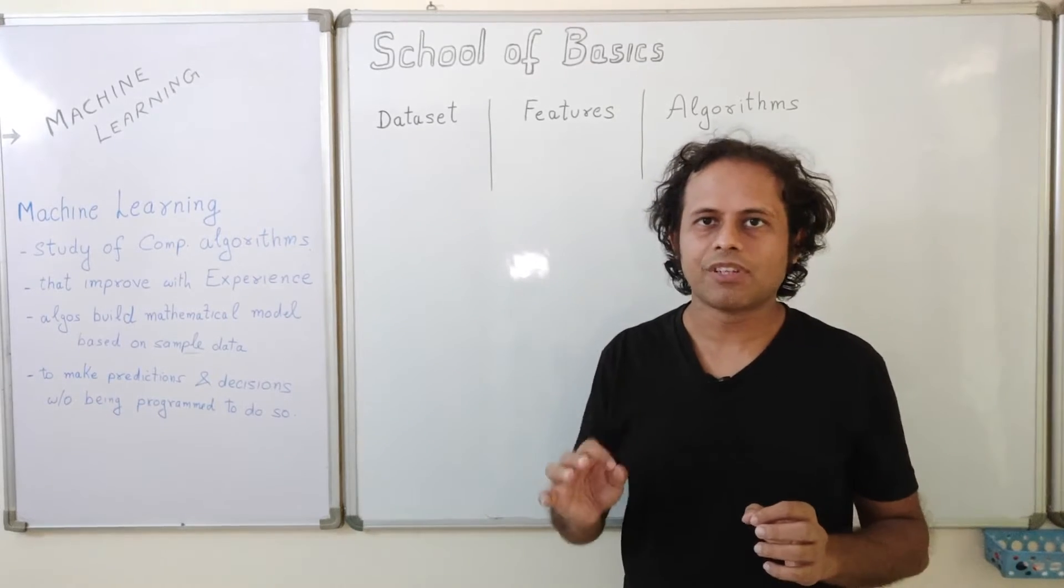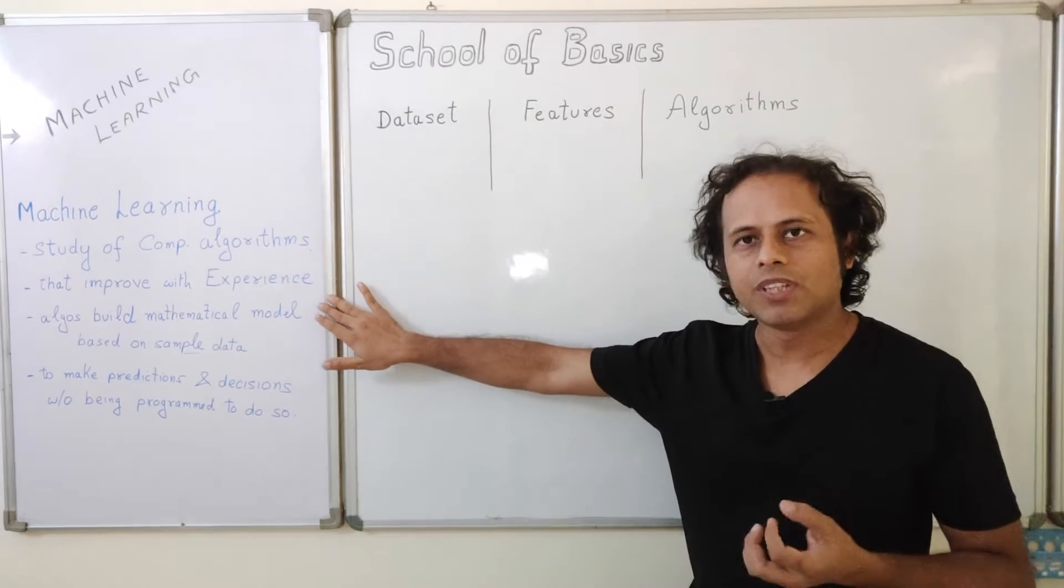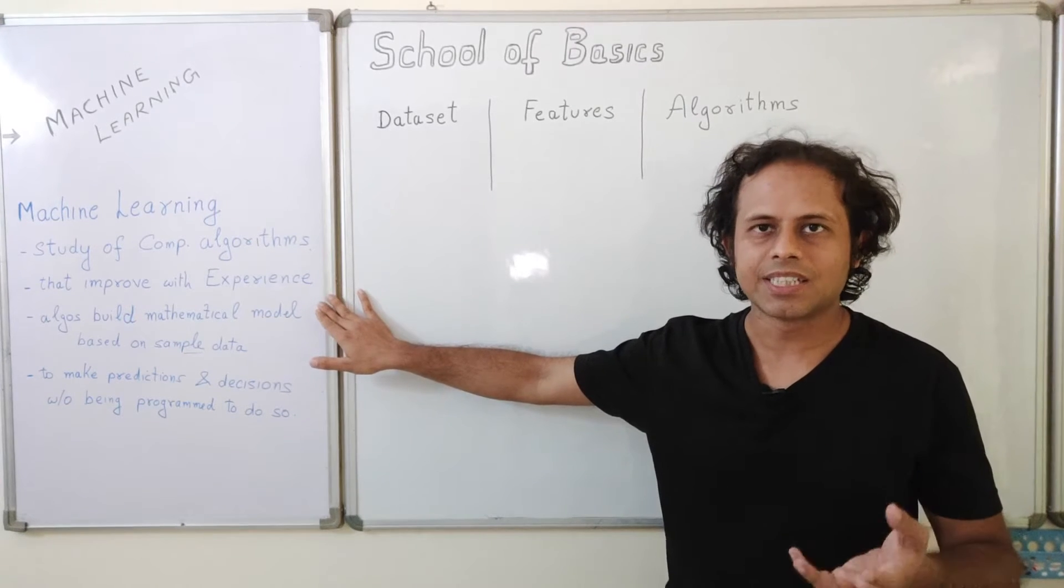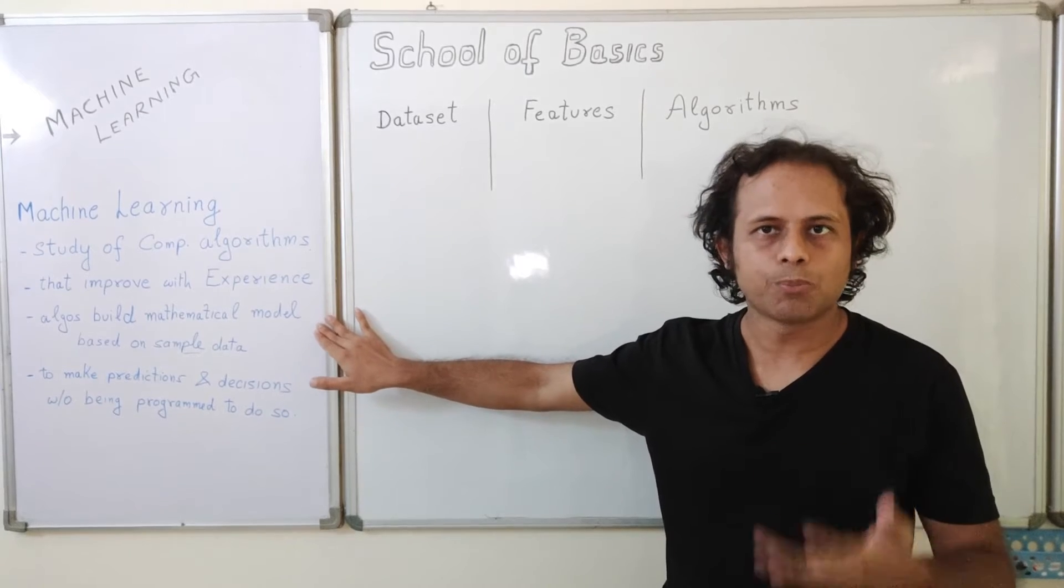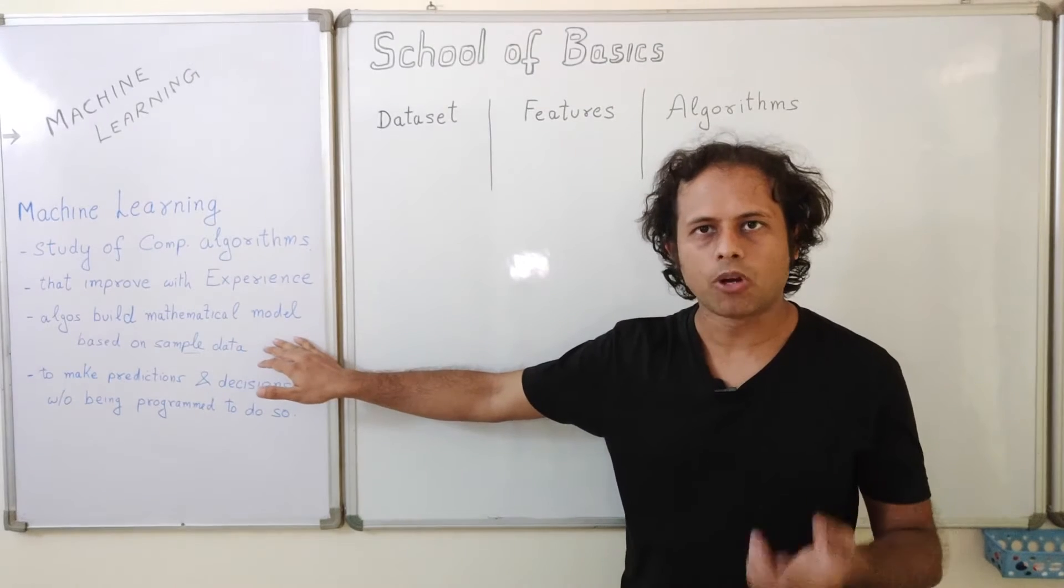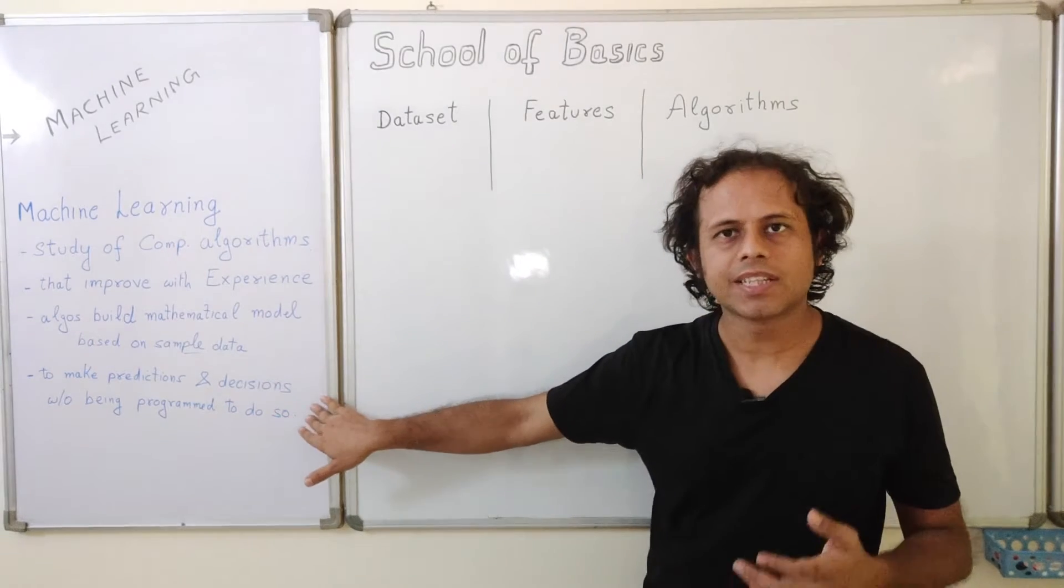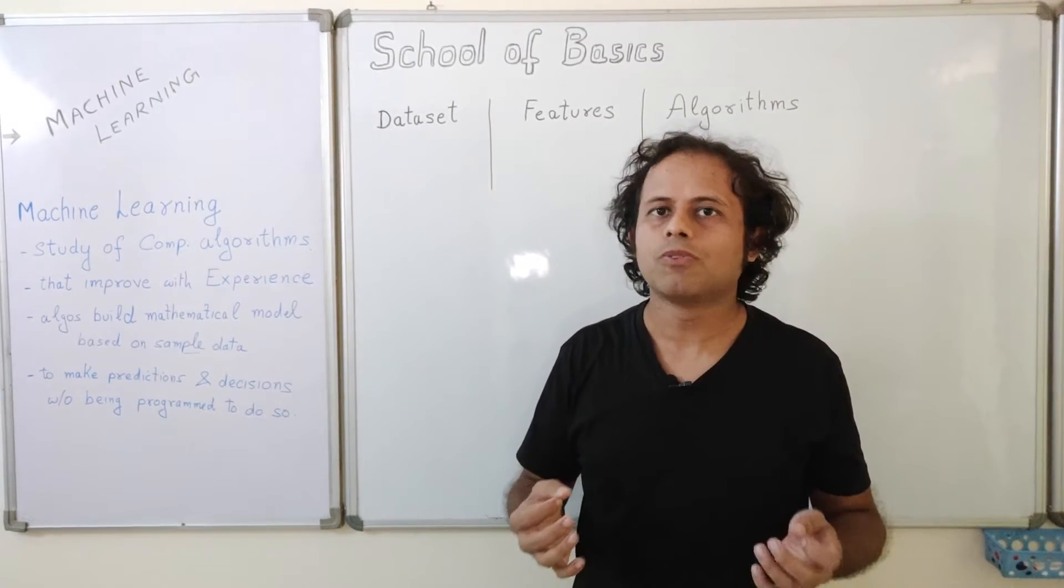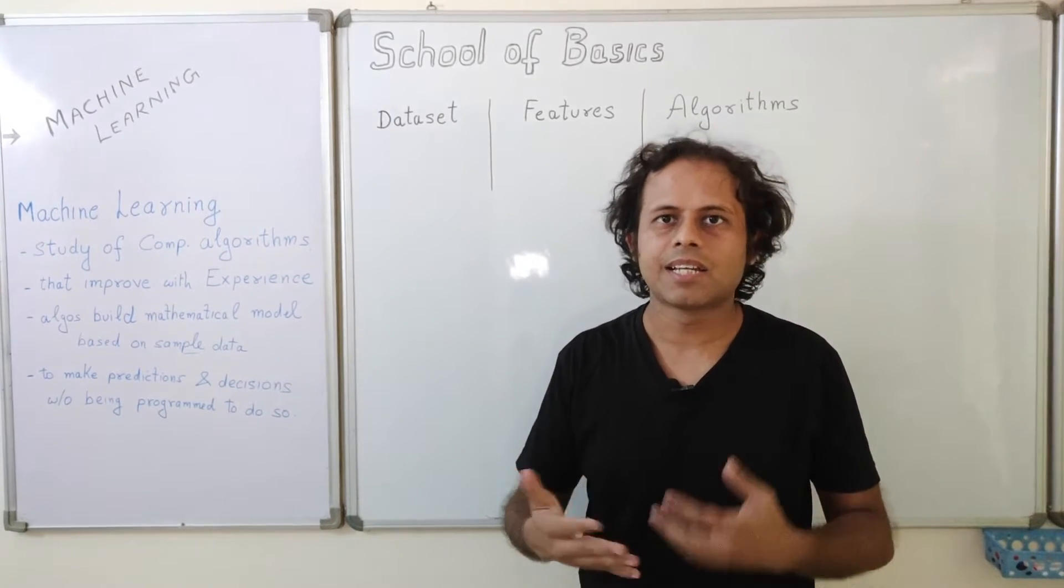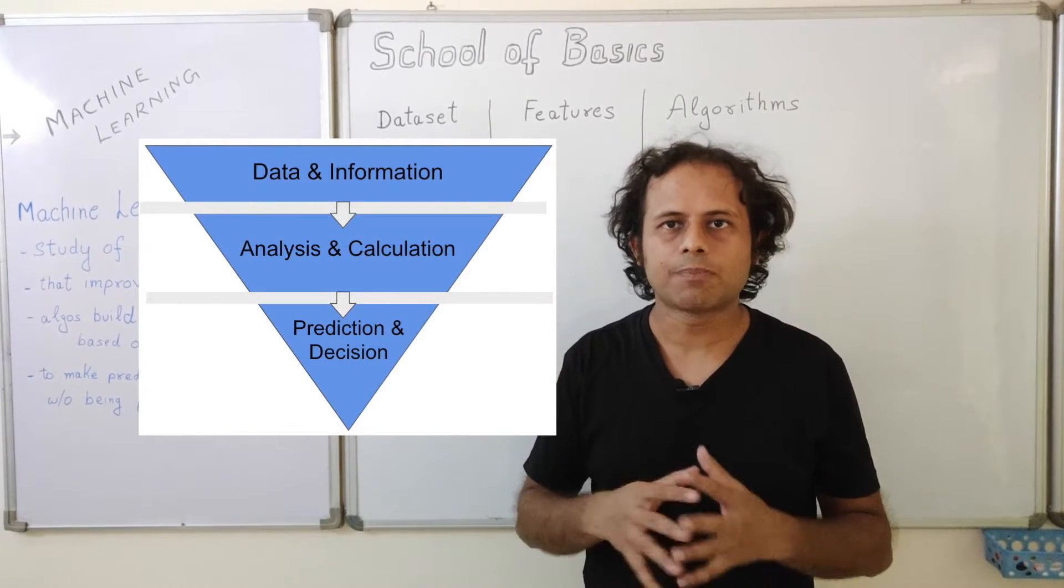Now if I go to the official definition, it says machine learning is the study of computer algorithms that improve with experience. So as we keep on giving more data and as it keeps on doing some predictions and decisions, it keeps on learning and improving with every experience. These machine learning algorithms build mathematical models based on sample data, also called training data, and based on that data, it can make predictions and decisions without being programmed to do so. We have not programmed for doing some particular action, but based on the data and information, it can take a decision and predict and do some actions without us having to code for that particular action.